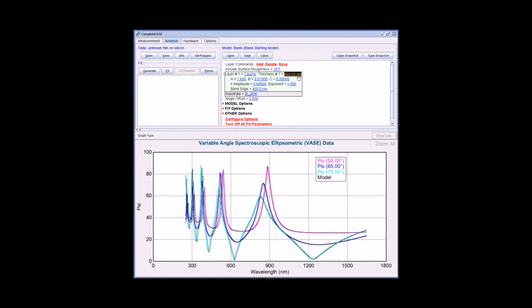Now I can turn on my fit parameters, right click on thickness, A, B, and C, and press fit. The software algorithm adjusted all of these values to find the perfect match between the model and the experimental data. The results are shown here in the fit panel.